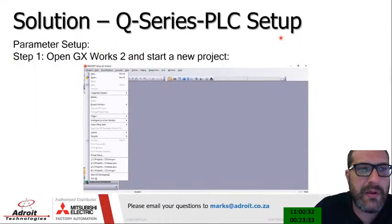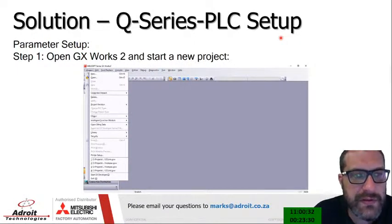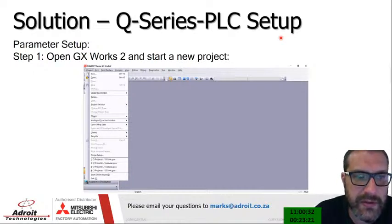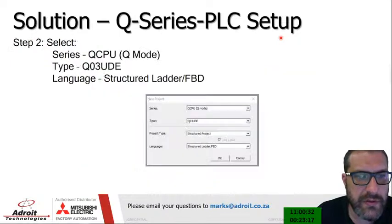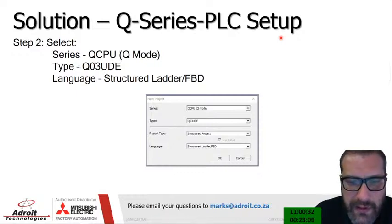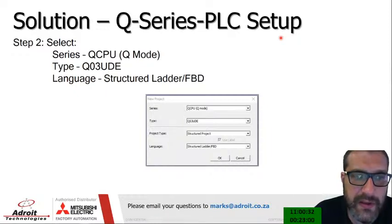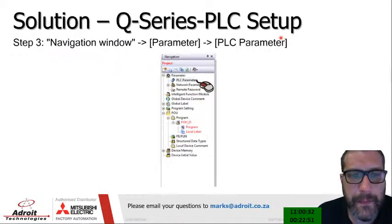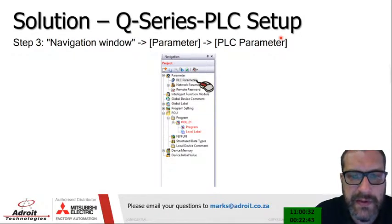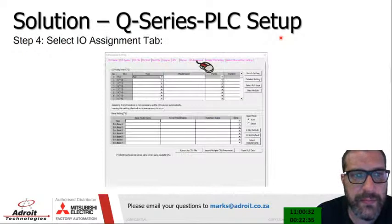To set up the Q series PLC in GX Works 2, step one is to open a new project — go to Project > New, then select your actual PLC type. In this example I used a Q03UDE, but you can use a Q02, Q05, Q18, or others. I use structured ladder/FBD as my language. Before doing anything else on a PLC, always set up the parameters first — go to the navigation window, then Parameter > PLC Parameter.